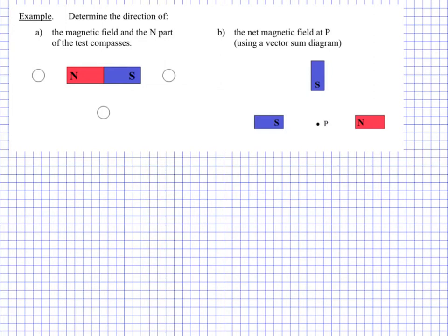Hello everyone! Here we are with another Physics 30 example. This time we're in Unit 3, which is Electromagnetism, and this is Lesson 3, which is Magnetism. So this is just a follow-on from our class, just going through a couple of examples, making sure that we're able to communicate the correct field lines from a magnet, and then of course, what orientation a compass would be in given those field lines.